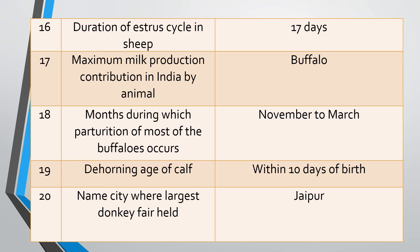Question eighteen: Months during which parturition of most buffalo occurs. Answer: Most buffalo parturition occurs during November to March. Question nineteen: Dehorning age of the calf. Answer: The calf should be dehorned within the first ten days of birth.